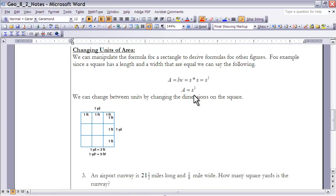So the next area we'd like to take a look at is changing units of area. We can manipulate the formula of a rectangle to derive formulas for other figures. As I mentioned earlier in this video, all of them are going to be derived from that. So for example, if we think about a square, we know a square - the length and the width are equal to each other. So the area is equal to length times width for a rectangle. A square is a rectangle.